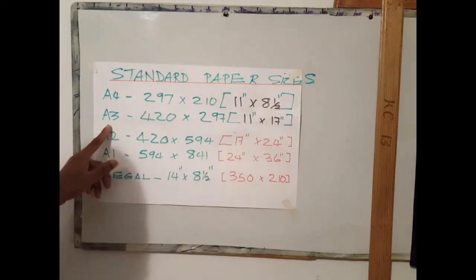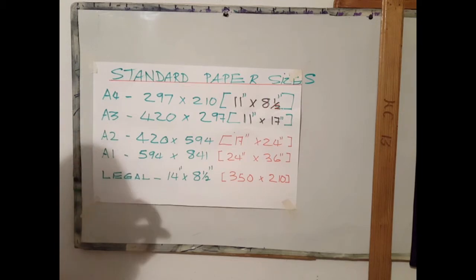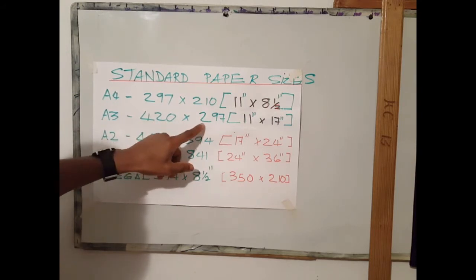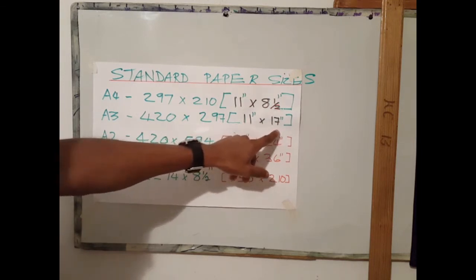It has dimensions of 297 millimeters by 210 millimeters or 11 by 8 and a half inches. Our A3 or tabloid size paper is a standard size paper used by CSEC and some architectural firms. This paper is twice the size of the A4. It is 420 millimeters by 297 millimeters or 11 by 17 inches.